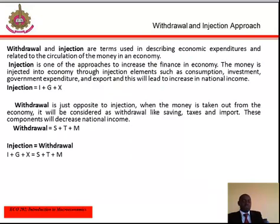Withdrawal and injection approach in an economy. Withdrawal and injection are terms used in describing economic expenditures related to the circulation of money in an economy. Injection is one of the approaches to increase finance in the economy. Money is injected into the economy through injection elements such as consumption, investment, government expenditure, and exports. This will lead to an increase in national income. The injection equation is: I plus G plus X, where I represents investment, G represents government expenditure, and X represents exports.